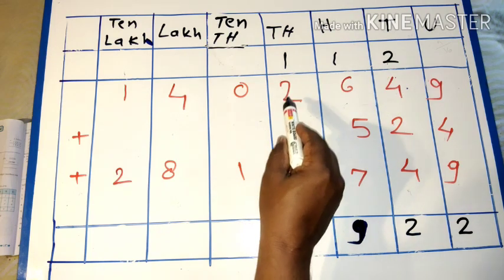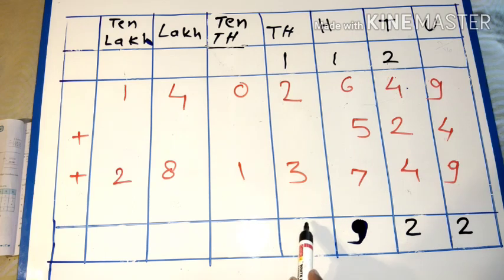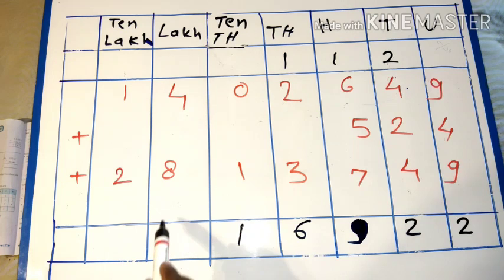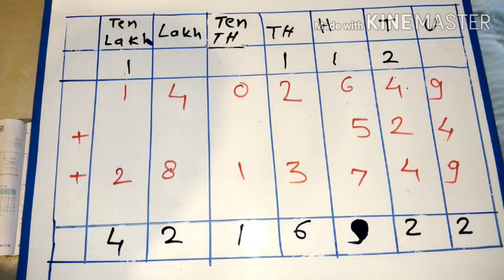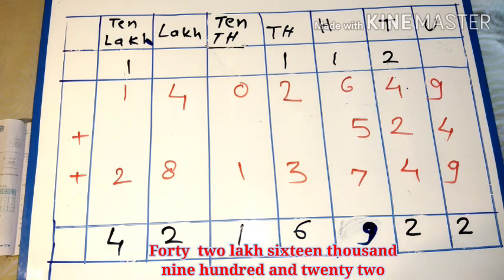One plus two equals three. Three plus three equals six. One. Four plus eight equals twelve. Here, four. The answer is forty-two lakh sixteen thousand nine hundred twenty-two. Do you understand?